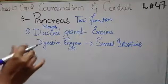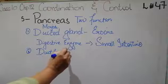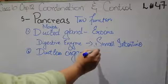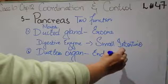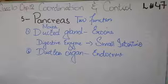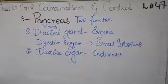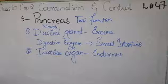On the other hand, some portion of the pancreas is a ductless organ, which we call the endocrine portion. The endocrine portion releases its secretions into the blood, and the blood carries them to the targeted tissue. So in summary, the pancreas has two functions: the digestive system role and the hormonal system role.